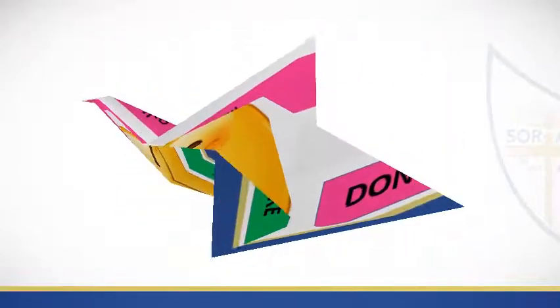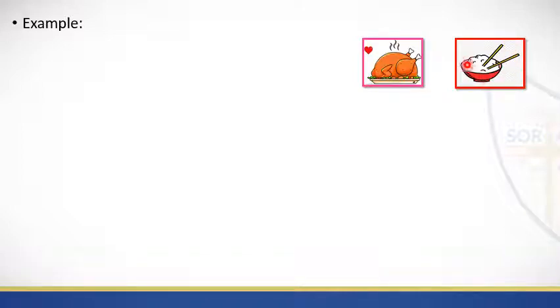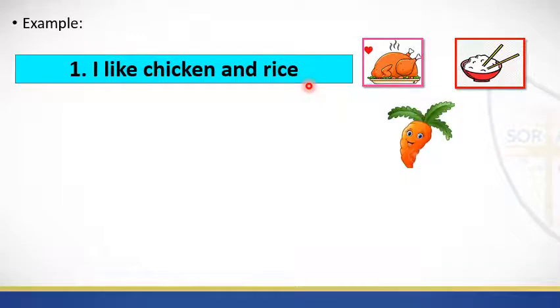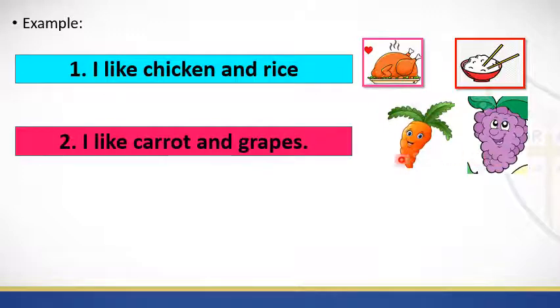Let's start with sentences. Pay attention. We're gonna start with examples. What is this one? This is a chicken, right? And this is a rice. What is the sentence? I like chicken and rice. I like chicken and rice. Me gusta el pollo y el arroz. The sentence is in positive. Look at the second example. What is this one? This is a carrot, and this is grapes. What is the sentence? I like carrot and grapes. I like carrot and grapes. Me gusta la zanahoria y las uvas. This example is also in positive.